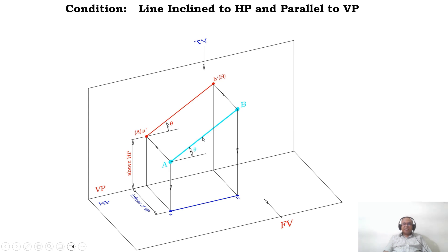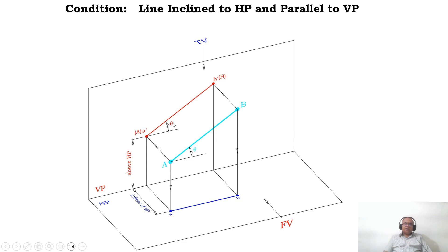How do I know that the line is inclined to HP? If I want to see the line inclined to HP, I should look from the front view. If you look from the front view, the image will fall on the vertical plane, represented as A dash and B dash. The inclination made by that line with respect to XY, or with respect to HP, is theta — the true inclination with respect to HP. We should first find out whether A dash B dash is in true length or not.